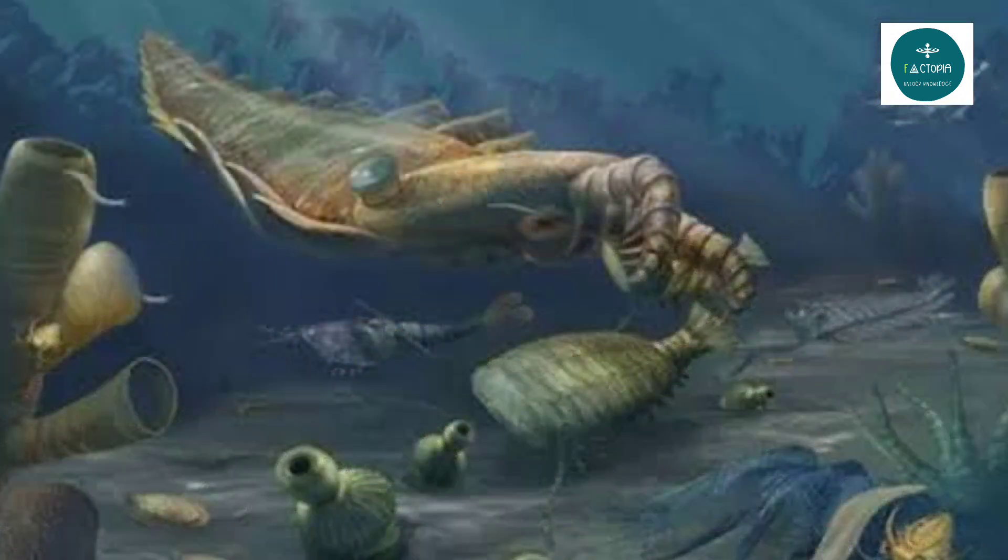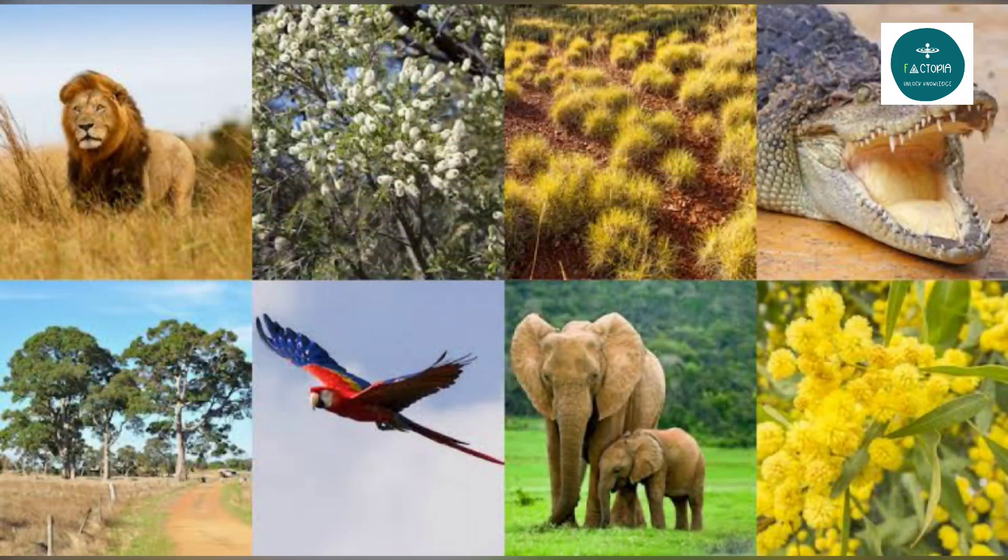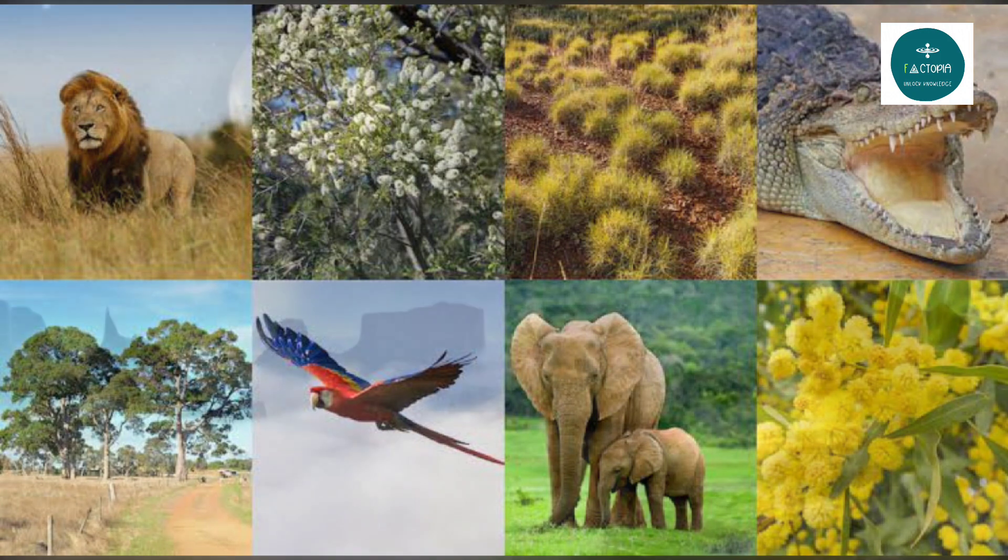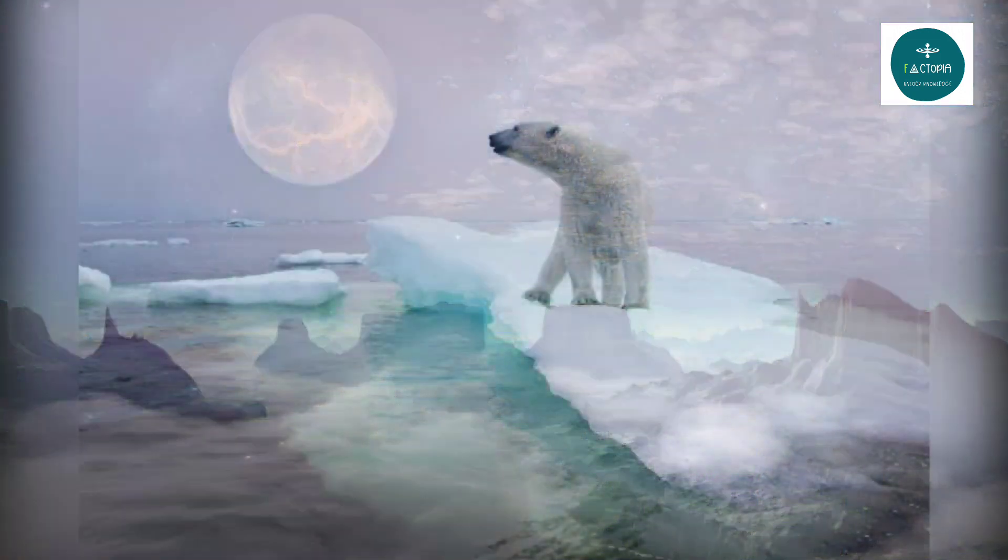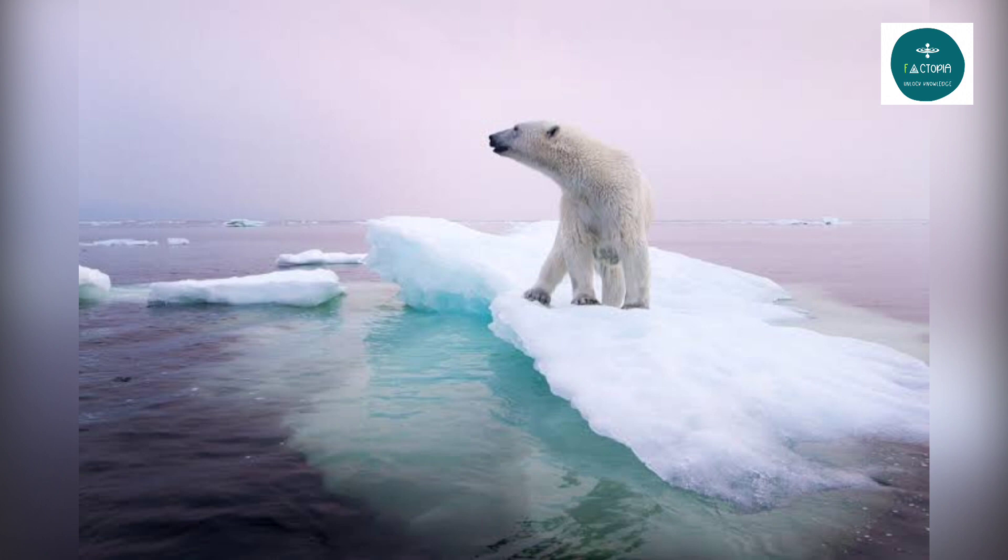Impact on life. The sudden stop of Earth's rotation would be catastrophic for most life forms. Plants and animals have adapted to the 24-hour day-night cycle, and abrupt changes in temperature and light would disrupt ecosystems. Additionally, the loss of the protective atmosphere due to atmospheric disruptions would expose life to harmful cosmic radiation.